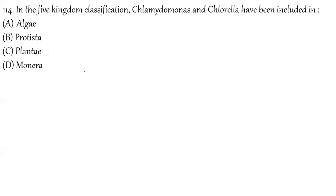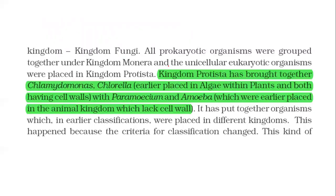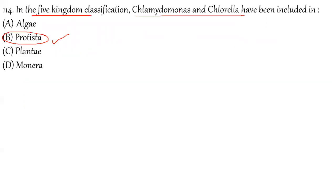Question 114: In the Five Kingdom system of classification, Chlamydomonas and Chlorella have been included in which kingdom? Even though they are studied in the plant kingdom chapter, as per the new NCERT they come under Kingdom Protista. Kingdom Protista has brought together Chlamydomonas and Chlorella, which were earlier placed in algae within plants. The correct answer for question 114 is option B — Protista.